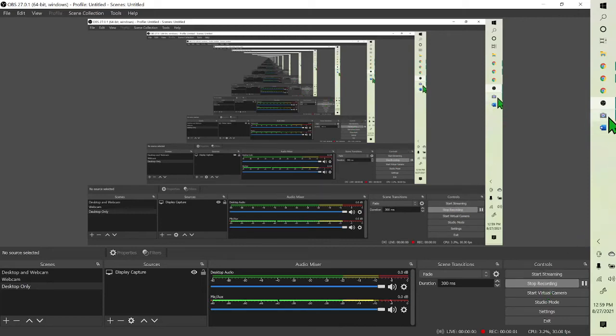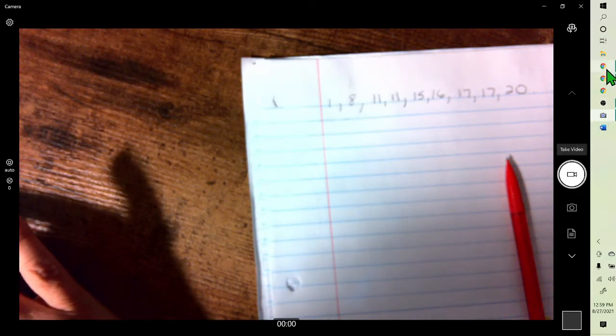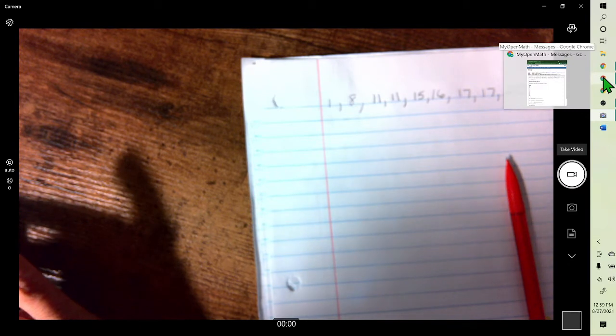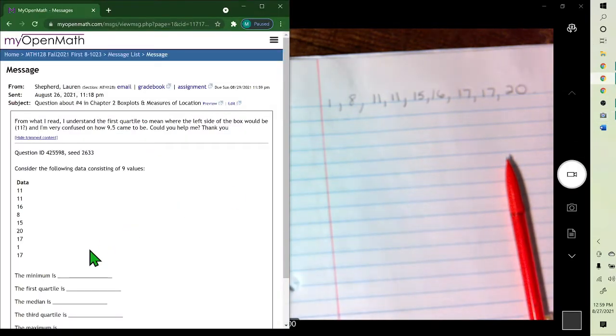Hello. So for the problem that you had a question on, what that is is the five number summary: the smallest, the first quartile, median, third quartile, and maximum.